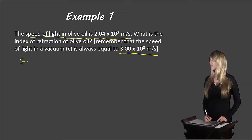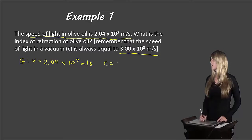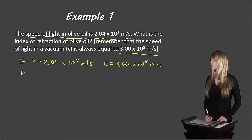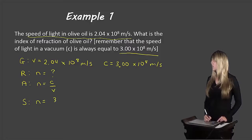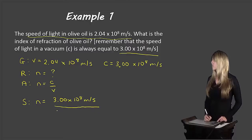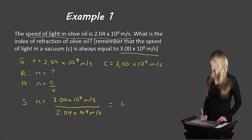So if we use our GRASS method: Givens are the speed of light in olive oil, which is V, equals 2.04 times 10 to the 8 meters per second, and C is 3.00 times 10 to the 8 meters per second. R for required — what do we need to know? We want to know N, the index of refraction in the olive oil. A for analysis — what's our formula? N equals C over V. So now we just need to substitute in there. N equals 3.00 times 10 to the 8 meters per second over 2.04 times 10 to the 8 meters per second. And if we do that math there, we end up with 1.47.